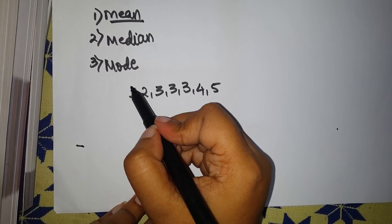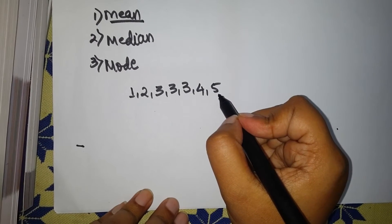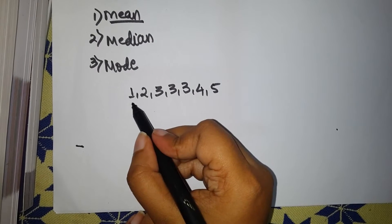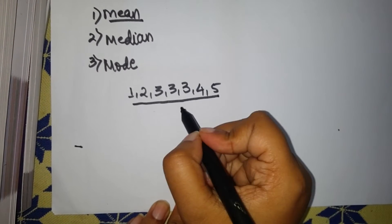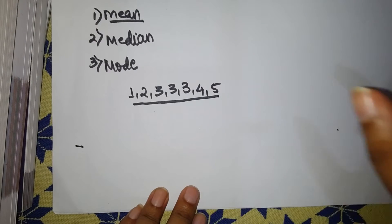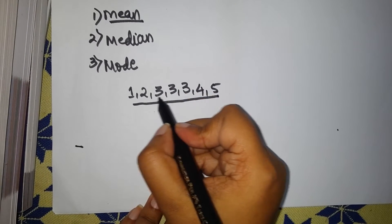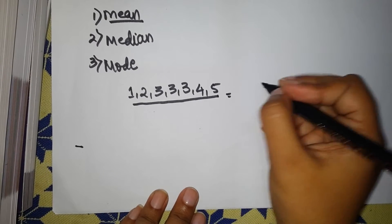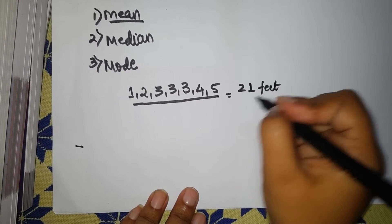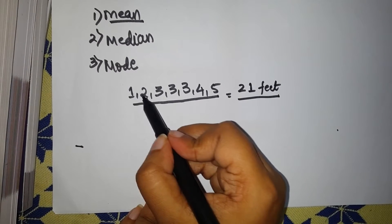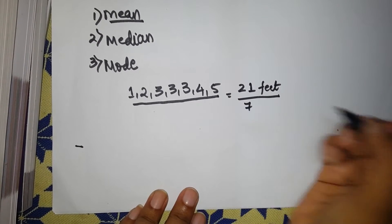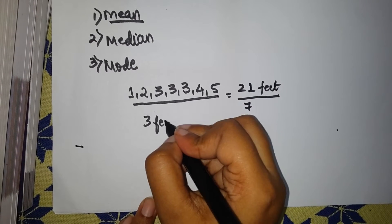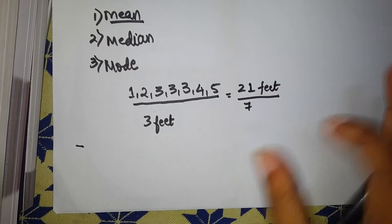The shortest student is one foot tall and the tallest is five feet tall. Mean is nothing but calculating the average height of any student in this class. You sum up all the values: 1+2+3+3+3+4+5 = 21, divided by the number of values, which is 7. So 21 divided by 7 gives an average height of three feet. This is the basic concept of mean.